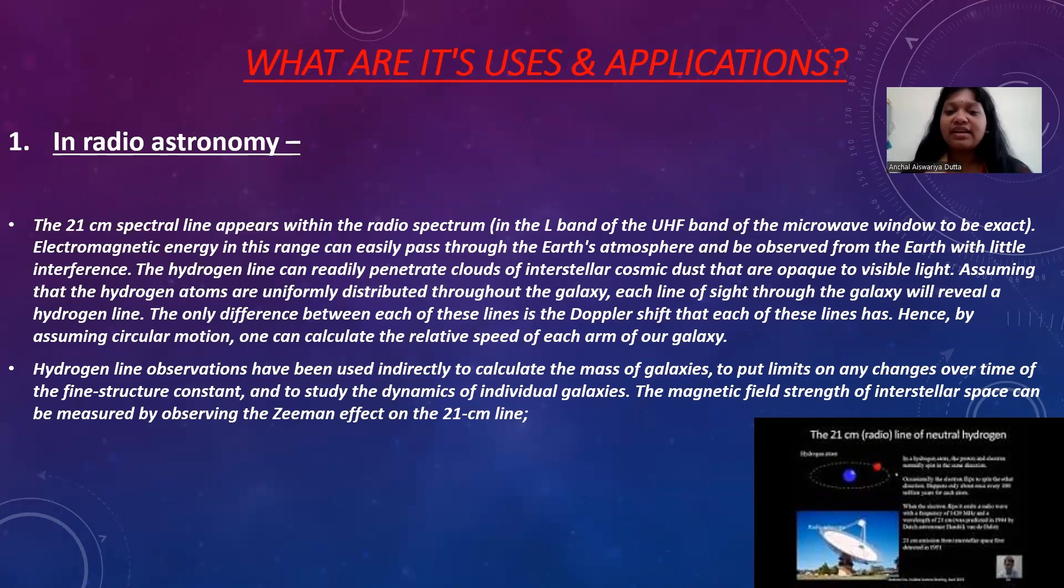First, in radio astronomy, the 21 cm spectral line appears within the radio spectrum. The hydrogen line can readily penetrate clouds of interstellar cosmic dust that are opaque to visible light. Assuming that the hydrogen atoms are uniformly distributed throughout the galaxy, each line of sight through the galaxy will reveal a hydrogen line. This observation has been used indirectly to calculate the mass of the galaxy.